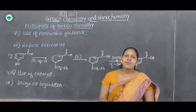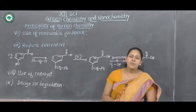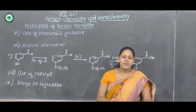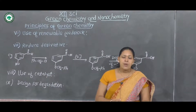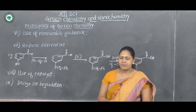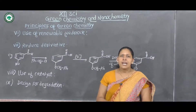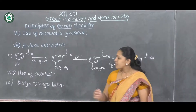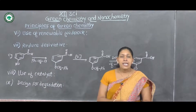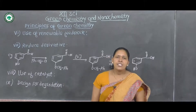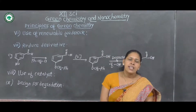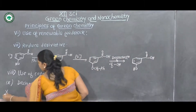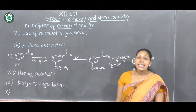Some polymers are biodegradable. Biodegradable polymers such as PHBV polymer or nylon-2 nylon-6 polymers are biodegraded. Such biodegradable polymers and pesticides are always preferred because they minimize pollution levels. Chemical synthesis should be designed so that biodegradation takes place automatically — that means degradation takes place through the environment via microbes. This is the principle of design for degradation.